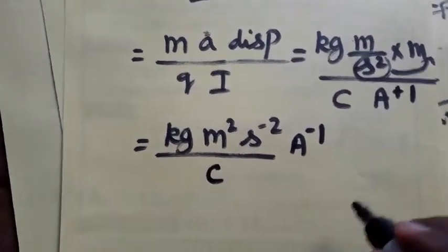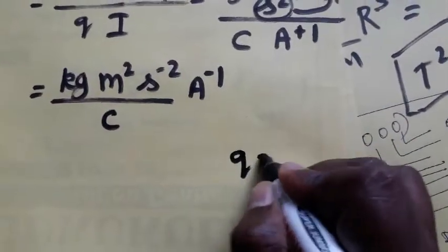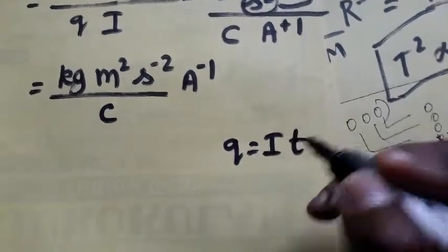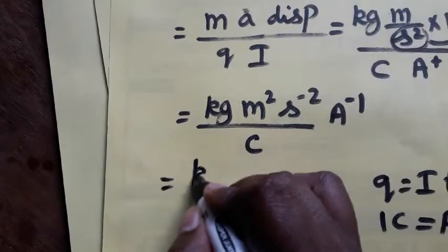So coulombs, what about the coulombs? So we know coulombs not having the dimensional formula, so charge is equal to current into time. We should change the coulombs as the ampere into second.